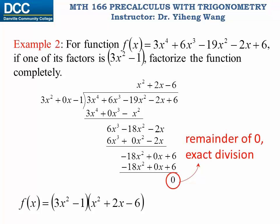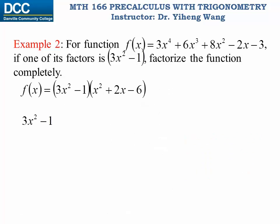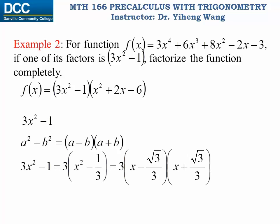For the quadratic factor 3x squared minus 1, it's relatively easy. We're going to follow the formula a squared minus b squared equals to a minus b multiplied by a plus b. Therefore, 3x squared minus 1 equals to 3 multiplied by x squared minus one-third, which equals to 3 times x minus square root of 3 over 3, times x plus square root of 3 over 3.